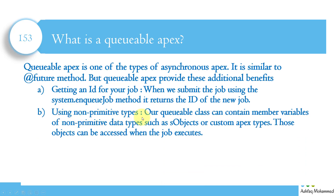The second benefit is using non-primitive data types. If you go back to Future methods, in Future we cannot use non-primitive data types — only primitive data types in the parameters. But in Queueable we can still use non-primitive data types. A Queueable class can contain member variables of non-primitive data types such as sObjects or custom Apex types, and those objects can be accessed when the job executes.